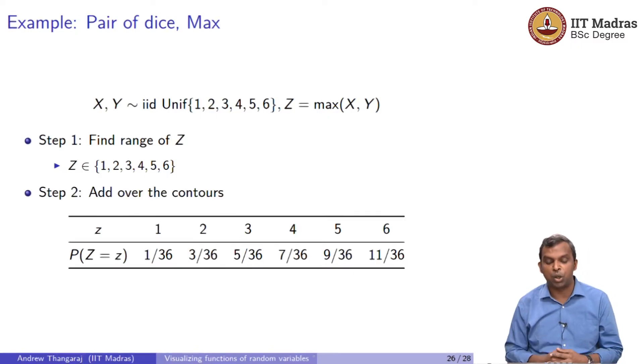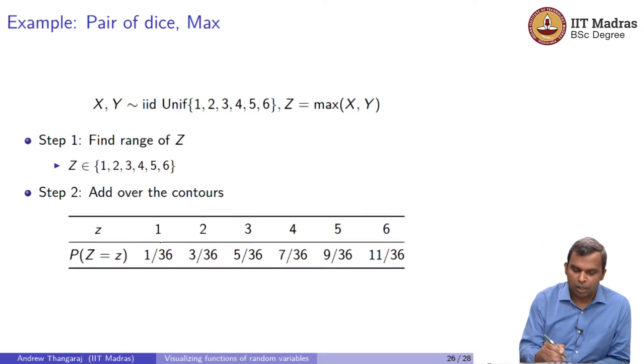Next you again add over the contours. Now adding over the contours is going to be a little bit more difficult here. I'm not going to do the graphical method. I will encourage you to work out the graphical method on your own. I will do the algebraic method. Let's look at 1. If you want the max of the two throws to be 1, the only possibility is 1 comma 1. Anything else happens, the max will go off to something bigger.